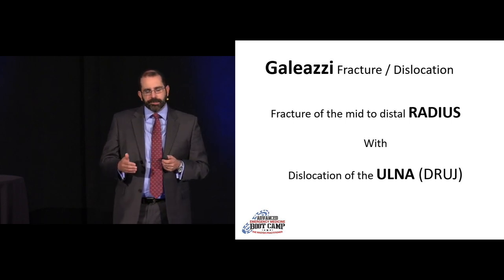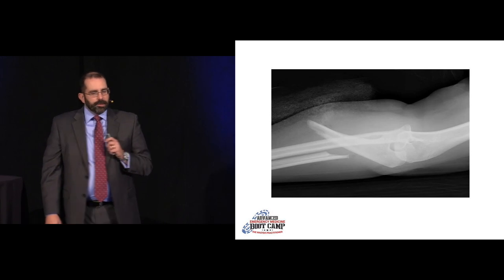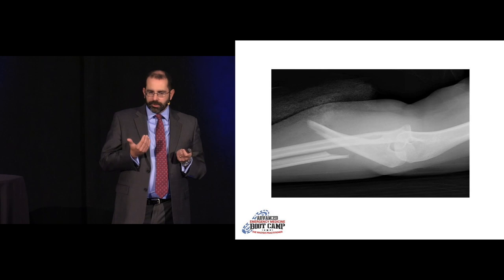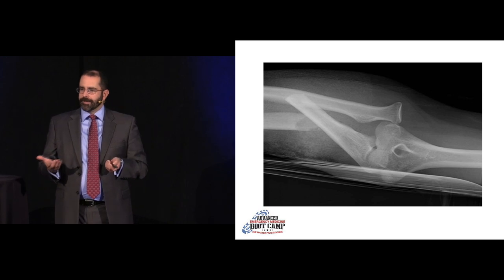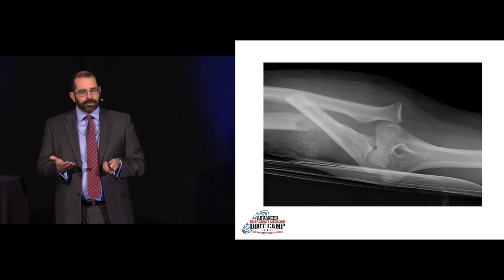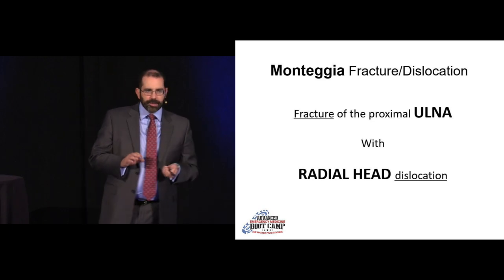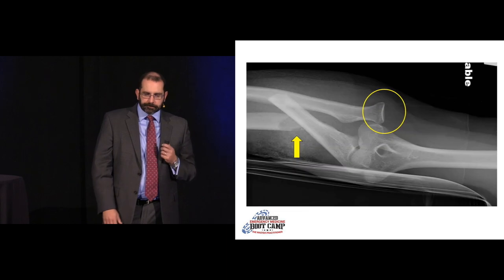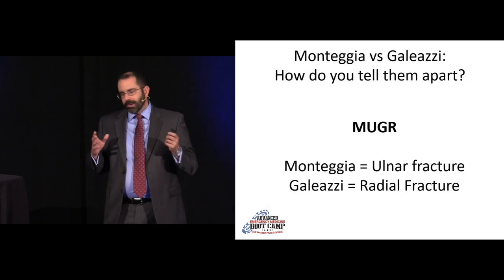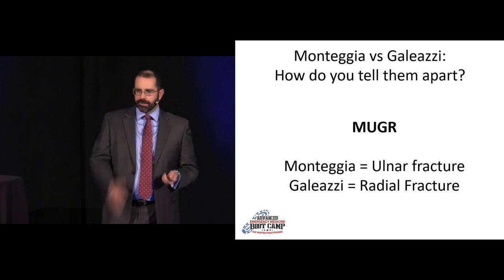Here's an MBA with an obvious proximal ulnar fracture — probably open given the dressing — with a pretty obvious radial head dislocation, making this a Monteggia fracture-dislocation: fracture of the proximal ulna with radial head dislocation. These are very obvious examples; they often aren't. Look for that other injury — use your radiocapitellar line, use your anterior humeral line. To remember them: the mugger mnemonic — Monteggia is an ulnar fracture, Galeazzi is a radial fracture; you just have to remember the associated injury.